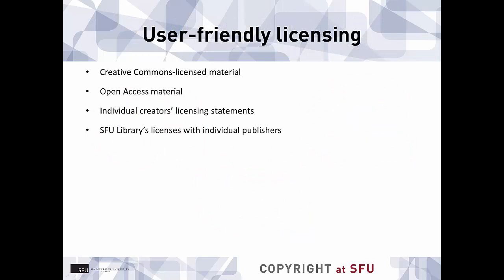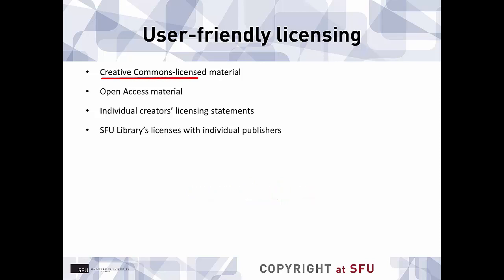These licensing situations are the least restrictive options for teaching with third-party materials, and if you can find materials in these categories, it can make your job much easier. You will find all of the information and links discussed on the Copyright website. First is Creative Commons licenses. Creative Commons has six different licenses which allow varying amounts of sharing and modification. These are applied by the author or creator themselves. Always check the citation and use requirements and limitations for each specific license.